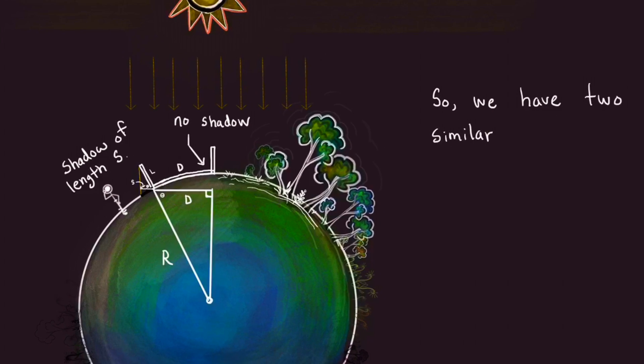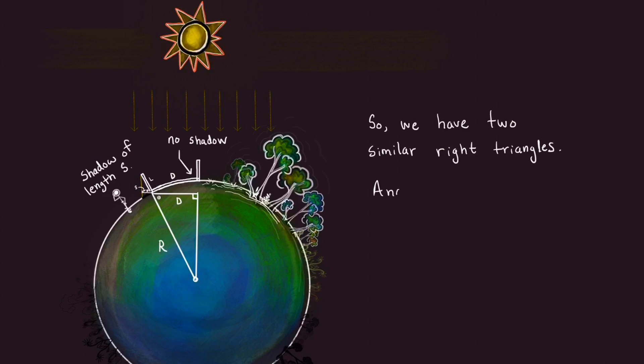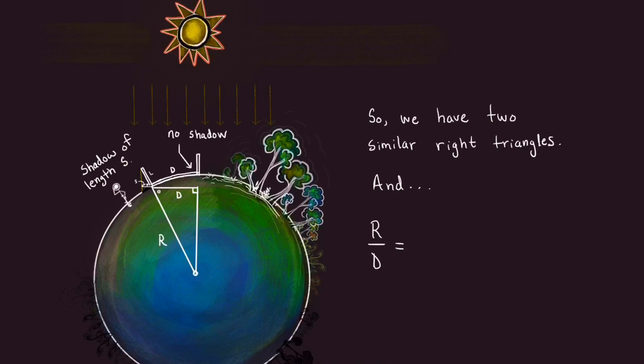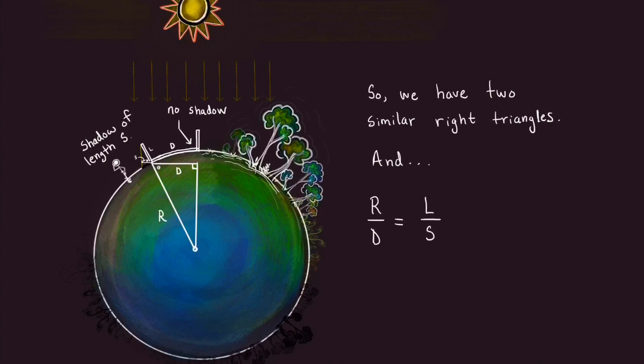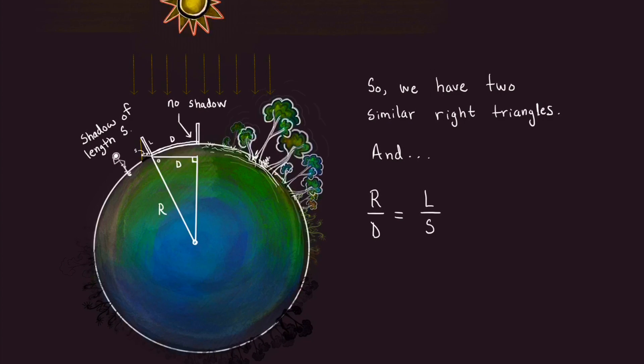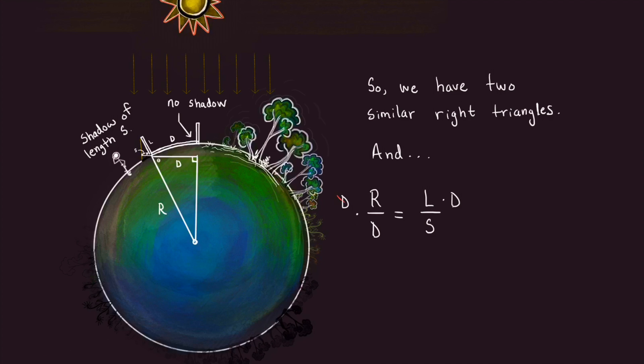We have two similar right triangles. The ratio of the hypotenuse of the large triangle, which is the radius of the planet, to the leg of the large triangle, which is the distance that was walked, is going to be equal to the ratio of the hypotenuse of the small triangle, the length of the stick, to the leg of the small triangle, which is the length of the shadow. And we multiply both sides of this equation by D to solve for the radius of the planet, which would be R = L × D / S.